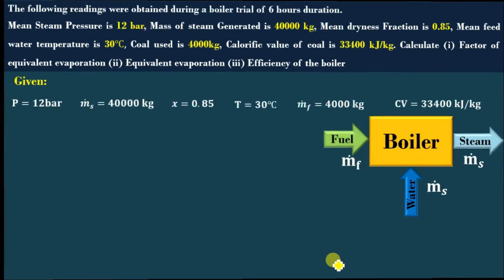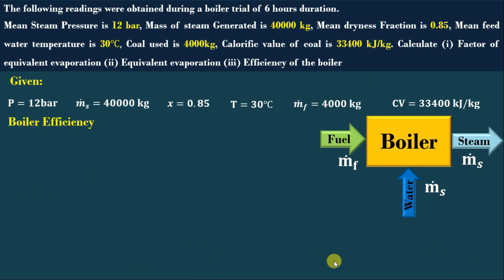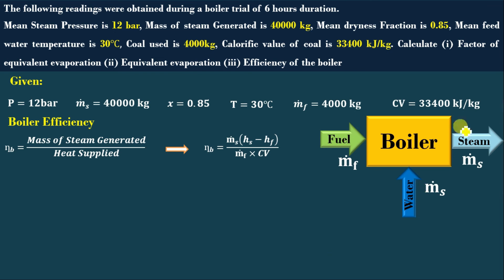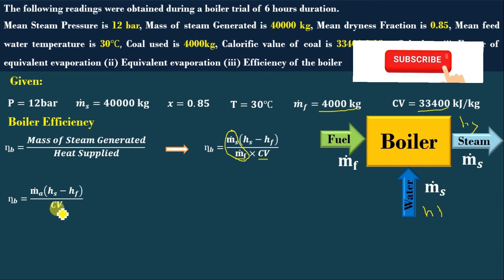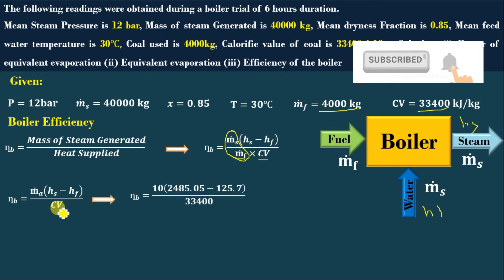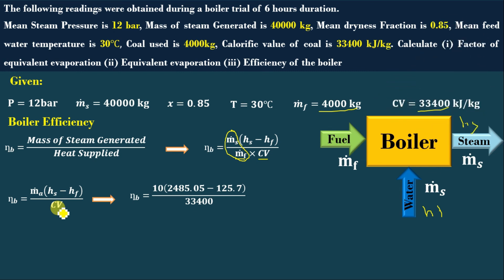Next, we will discuss boiler efficiency. Efficiency = output / input. Output is the mass of steam generated multiplied by the enthalpy difference (Hs − Hf), and input is mass of fuel multiplied by calorific value. This can be written as: η = MA × (Hs − Hf) / Cv. Substituting: η = 10 × (2485.05 − 125.8) / 33,400 = 70.06%. This is without considering the various losses — only input fuel and output steam are considered.